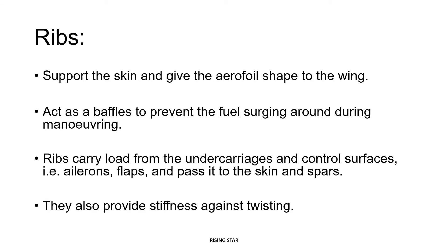Ribs provide support to the skin and give the aerofoil shape. They also act as baffles to prevent fuel surging during maneuvering. Ribs have holes in them which allow the controlled flow of fuel inside the space and help maintain the center of gravity during flight. They also carry a fair share of load from undercarriages and control surfaces such as ailerons and flaps, passing this load to the skin and spars, and they help provide stiffness against twisting.